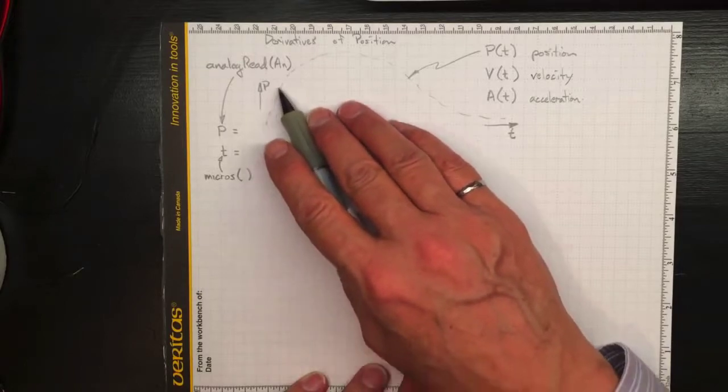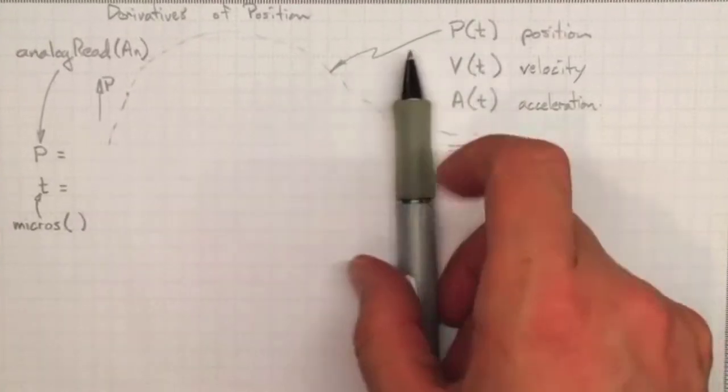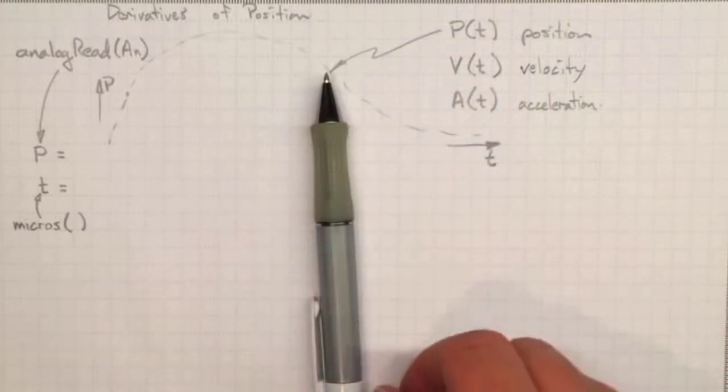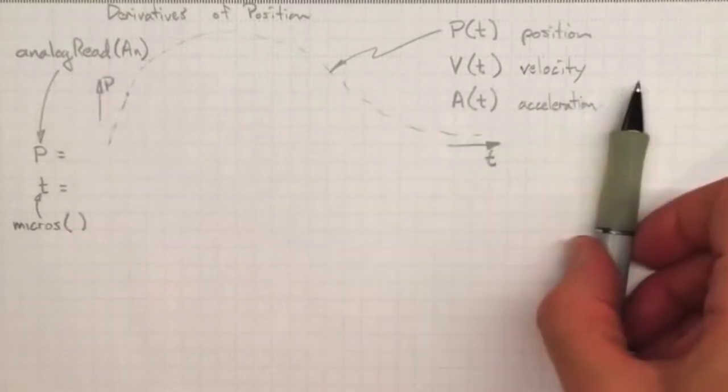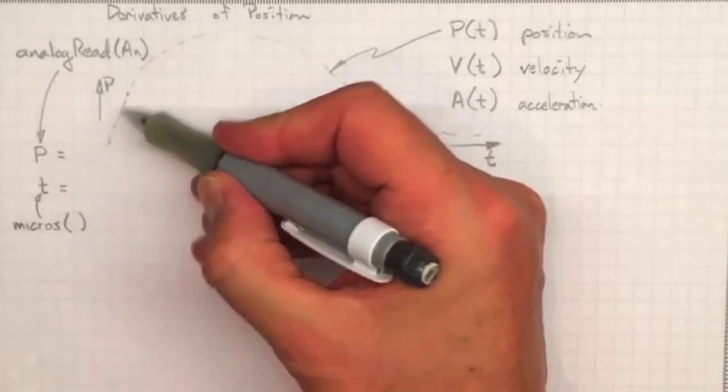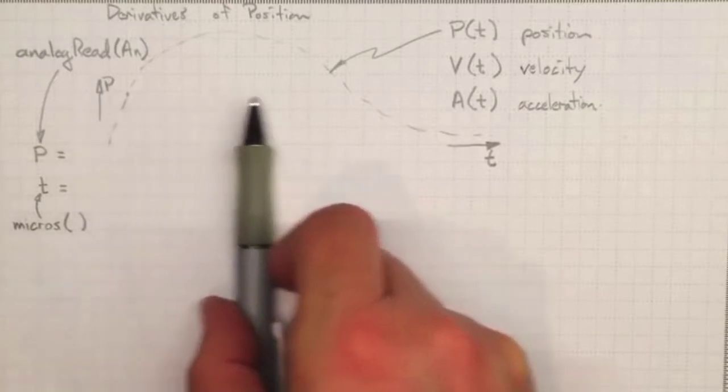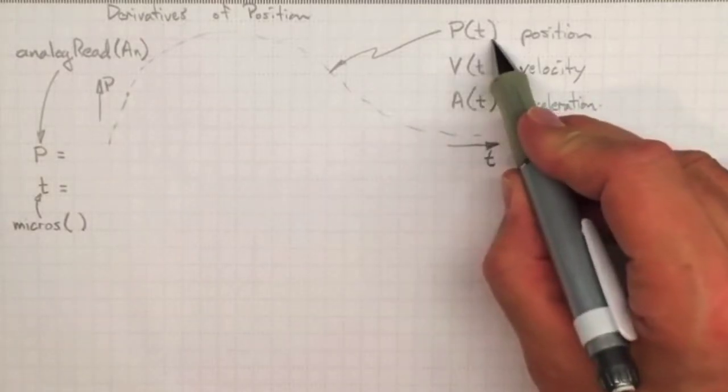Suppose we're tracking the position of something over time. It might be the rotational orientation of that pointer on the potentiometer, or it might be a linear motion back and forth in one axis, but it will change with time. This pen will always have a position. We may not know what it is, so the position as a function of time exists.